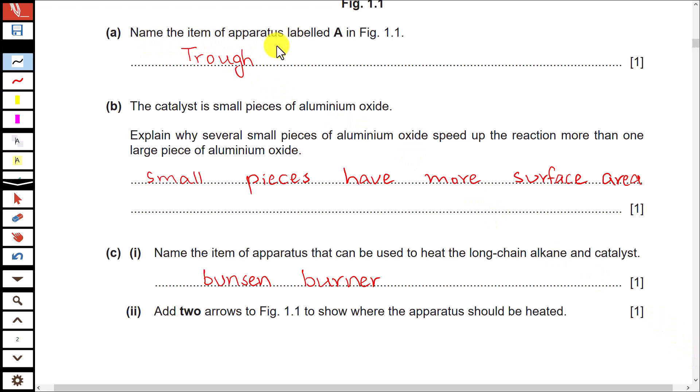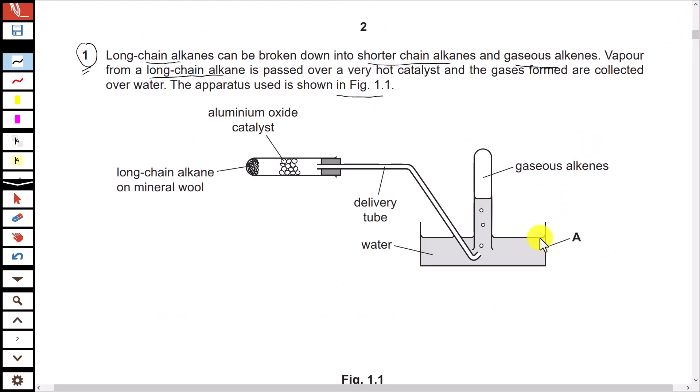Name the item of apparatus labeled A in figure 1.1. Look at this. This is a trough filled with water.